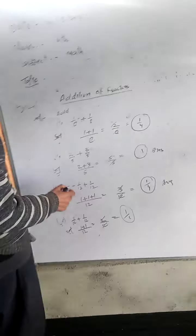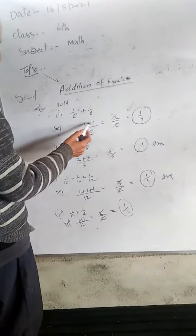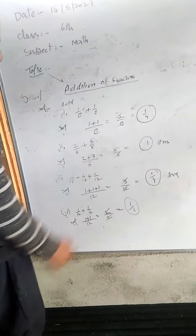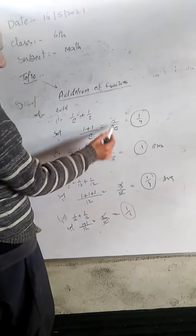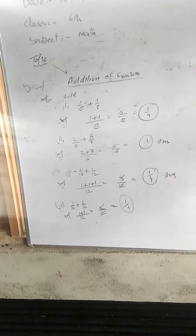This is the same. Let's say one-eighth plus one-eighth. One plus one divided by eight. Two by eight equals one-half. Two plus eight, one by four. This is the answer.